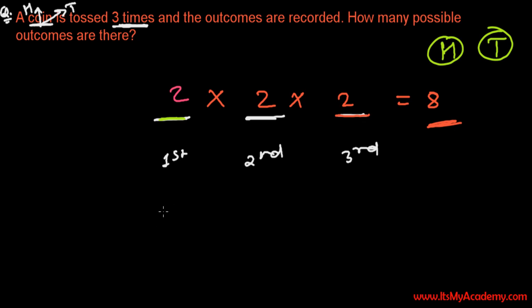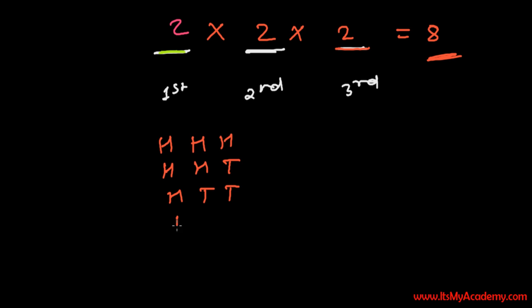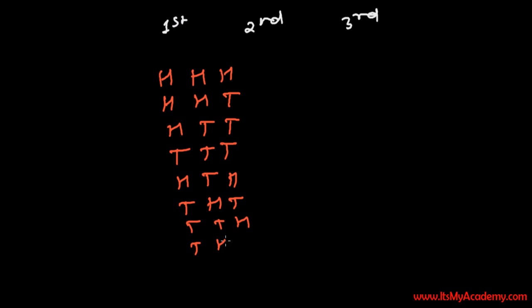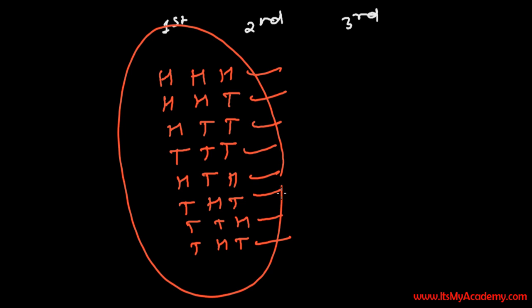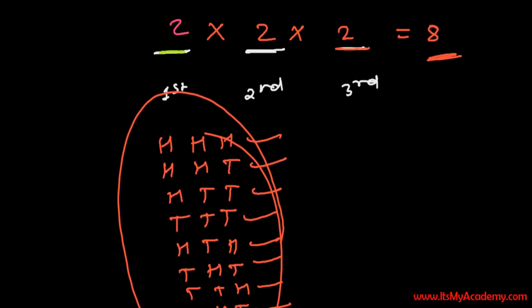I'm going to say: first time you get head, then you get head again, you get head - HHH. You get head, head, then tail - HHT. It may be like head, tail, tail - HTT. It may be like head, tail, head - HTH. It will be tail, head, tail - THT. It may be tail, tail, head - TTH. Or maybe tail, head, tail - THT. So first, second, third, fourth, fifth, sixth, seventh, and eighth. So there are total eight outcomes. There are eight possible outcomes.